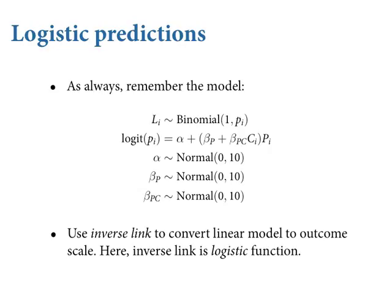Let's get back to regression and push some predictions out of this model. The basic strategy is the same as previous models — you just have to attend to the new bits of machinery. In particular, there's a link function, so there's an intermediate step: you calculate the value of the linear model, then transform it with the inverse link before plugging it into the likelihood. For a logit link, the inverse is the logistic function, which gives a predicted probability.